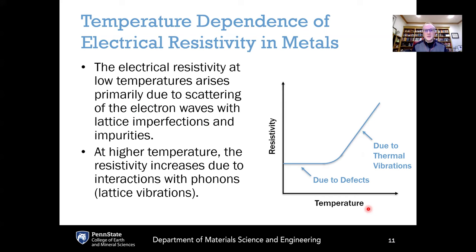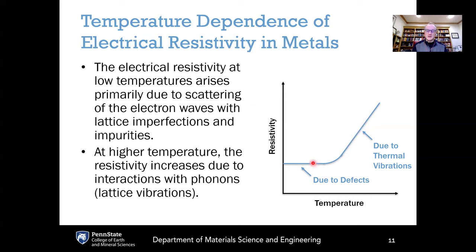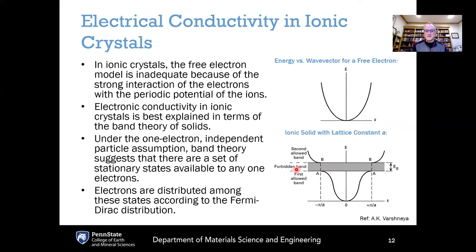Considering the temperature dependence of electrical resistivity in metals: resistivity has a floor governed by defects, then increases at higher temperatures due to greater thermal vibrations. At low temperatures, resistivity arises primarily from scattering of electron waves by lattice imperfections and impurities. At higher temperatures, resistivity increases due to interactions with phonons or lattice vibrations, so metals generally show lower resistivity at lower temperatures bottoming out at a level determined by defects.